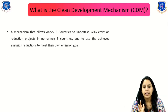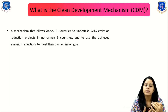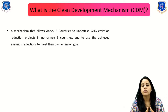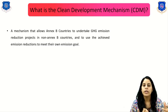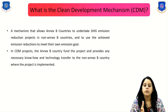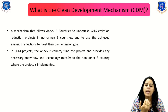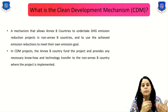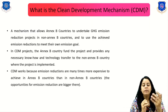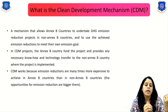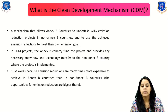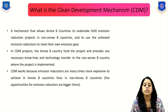The Clean Development Mechanism allows Annex 2 countries to undertake greenhouse gas emission reduction projects in non-Annex 2 countries and use the achieved emission reductions to meet their own emissions goals. In CDM projects, Annex B countries fund the project and provide the necessary technology transfer to non-Annex B countries where the project is implemented. The CDM works because emission reductions are many times more expensive to achieve in developed countries, so the opportunity for emission reduction is bigger in developing nations.